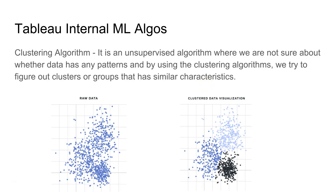Welcome to the next video. In this video I will talk about Tableau's internal machine learning algorithm. One of the very first algorithms we will see is the clustering algorithm. It is an unsupervised algorithm where we are not sure about whether data has any patterns, and by using clustering algorithms we try to figure out clusters or groups that have similar characteristics.